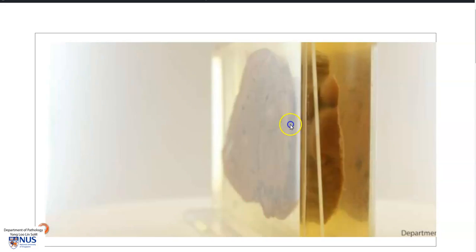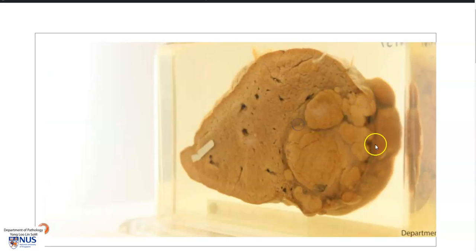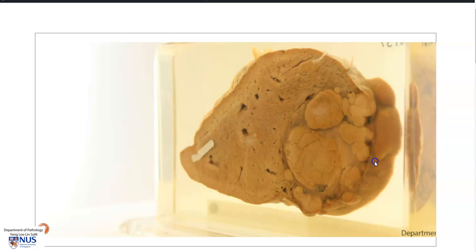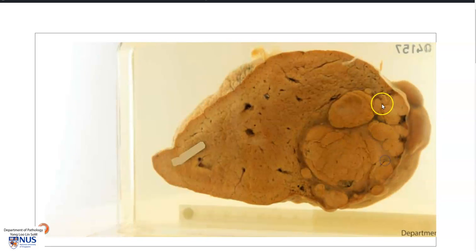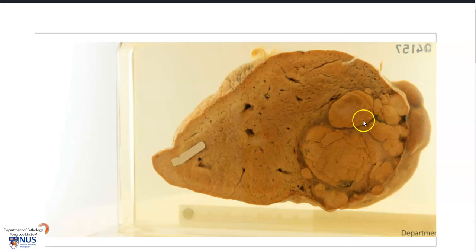The mass protrudes out of the liver capsule here, causing this distorted nodular appearance, and on the opposite surface you can see that it is fairly lobulated, very fleshy, and tan in color.